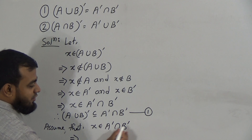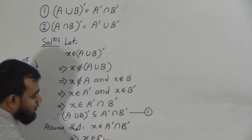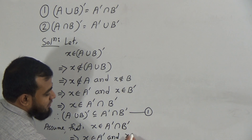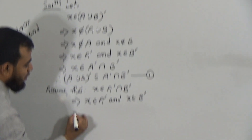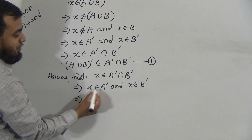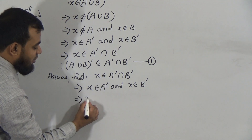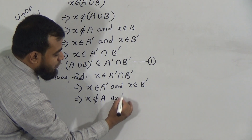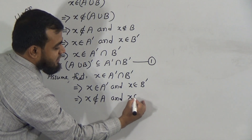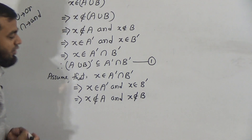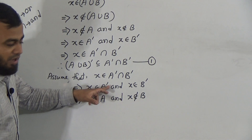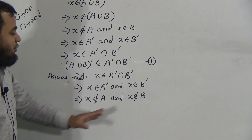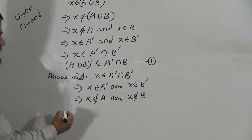Since x belongs to A prime intersection B prime, we can say x belongs to A prime, and x belongs to B prime. If x belongs to A prime, then x doesn't belong to set A. Similarly, x doesn't belong to set B.